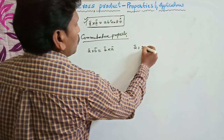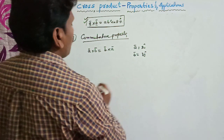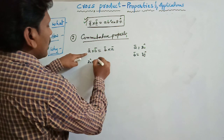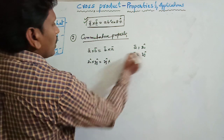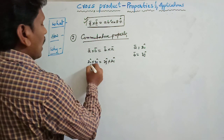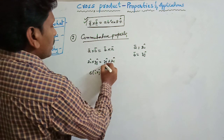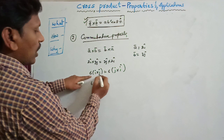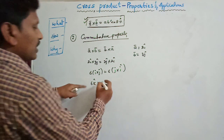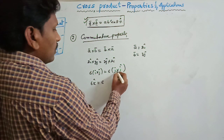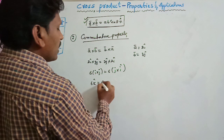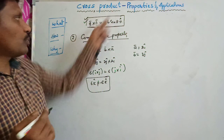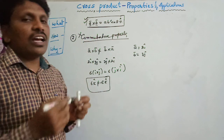Let us consider A bar = 2i cap and B bar = 3j cap. Then A cross B = 2i cap × 3j cap = 6(i × j) = 6k cap. And B cross A = 3j cap × 2i cap = 6(j × i) = 6(−k cap) = −6k cap. Since 6k cap ≠ −6k cap, the cross product does not obey the commutative law or commutative property.